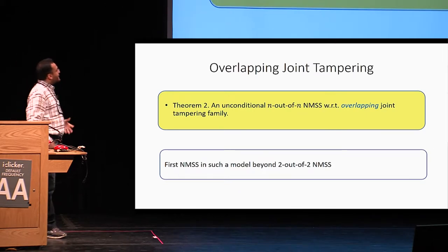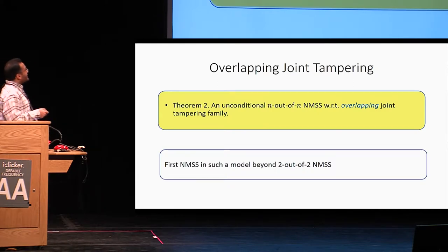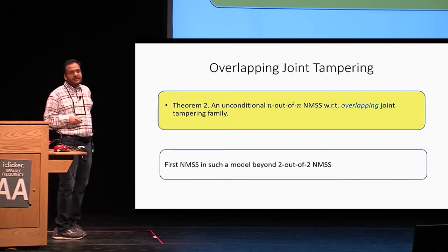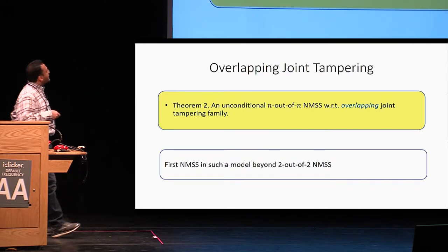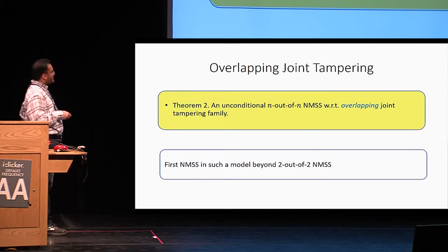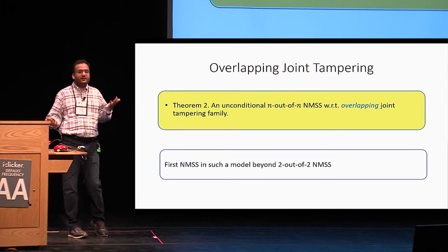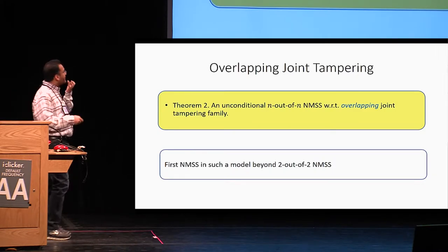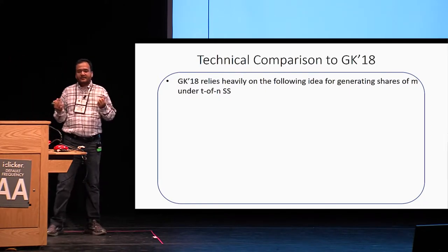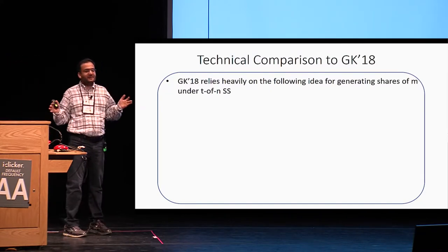Our second main theorem goes further in the tampering models, obtaining a result for overlapping joint tampering. We construct an unconditional N-out-of-N non-malleable secret sharing scheme with respect to the overlapping joint tampering family — the first such scheme in this model. For two-out-of-two non-malleable secret sharing, all three tampering models are equivalent. Many of our construction ideas borrow from Goyal and Kumar, and I'll try to explain the key differences.